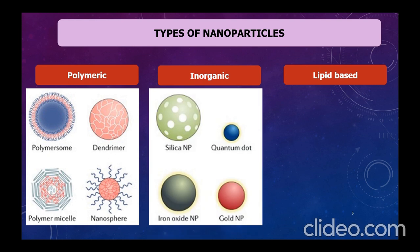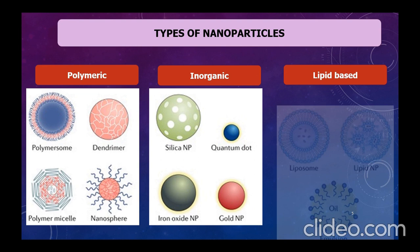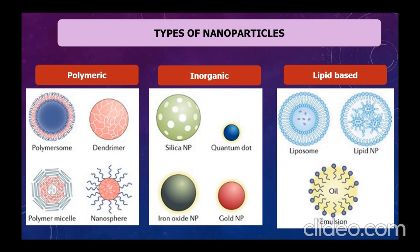Inorganic nanoparticles include silicon nanoparticles, quantum dots, iron oxide nanoparticles, and gold nanoparticles. They are nanoscale materials with novel properties, typically composed of two or more inorganic materials with different properties produced by physical or chemical methods. The third type is lipidic-based nanoparticles like liposomes, lipidic nanoparticles, and emulsions.